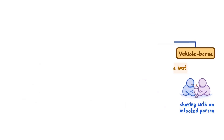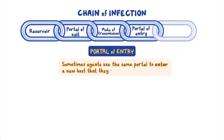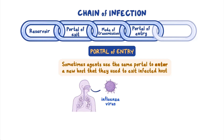The next link in the chain of infection is the portal of entry, or the way an agent enters a susceptible host. For some agents, the portal of exit and the portal of entry are the same. For example, influenza virus exits the respiratory system through the mouth or nose of the infected host and enters the respiratory system through the mouth, eyes, or nose of the new host.